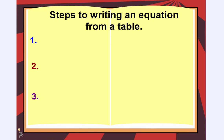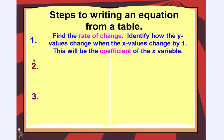Step number one: find the rate of change. Identify how the y values change when the x values change by one. The rate of change is how y is changing every time x changes by one. That's the rate of change. And this answer will be the coefficient of the x variable — this rate of change is what you're multiplying x by.